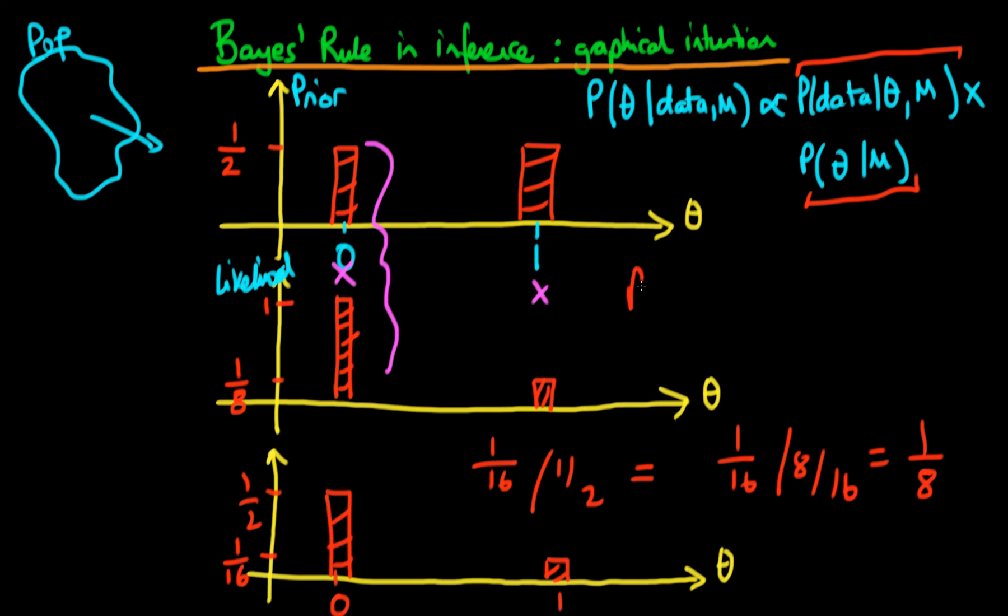Which if you remember, if you go back to our posterior probabilities, we have the probability that theta is equal to zero given our data and given our model choice we found was eight ninths, and the probability that theta was equal to one given our data and given our model choice was one ninth. So the ratio of these two probabilities would also be one eighth.